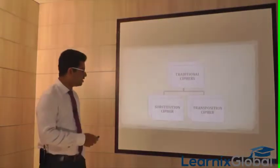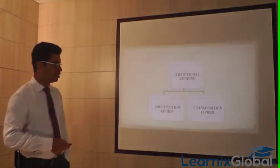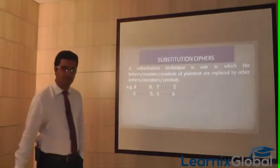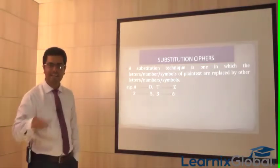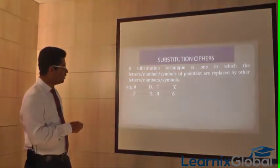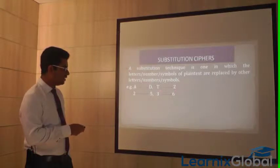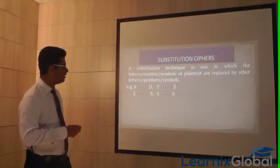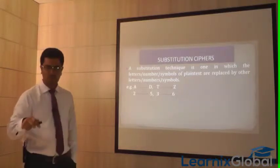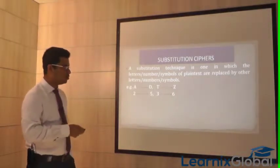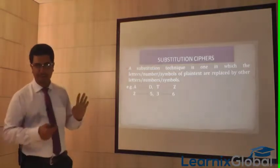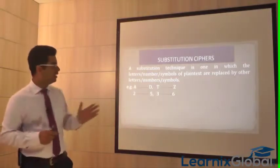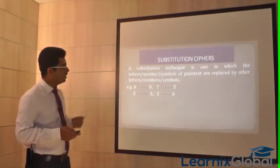In traditional ciphers there are two types: substitution and transposition. In the substitution cipher, letters, numbers, or symbols of the plaintext are replaced by other letters, numbers, or symbols. For example, A is replaced by D, 2 by 5, T by Z, 3 by 6. The entire mapping logic is sent separately, and the end user uses it to decrypt and read the message.